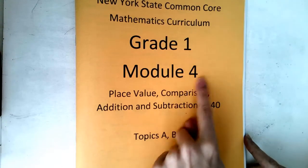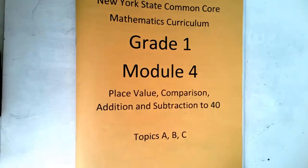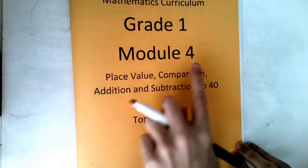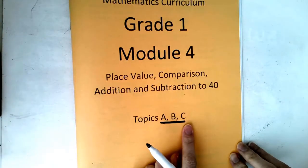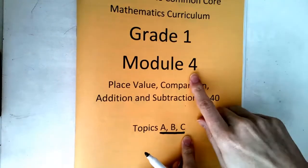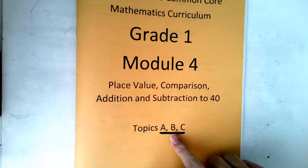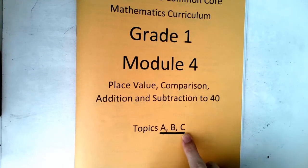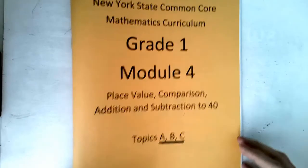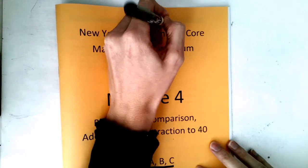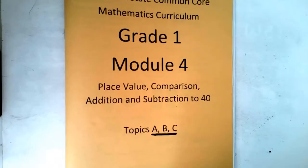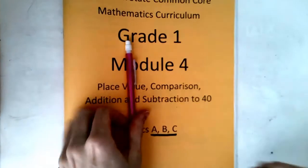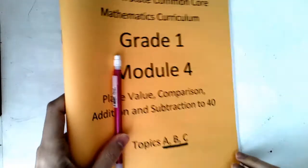Make sure you have the Module Four math journal. There are actually two math journals that say Module Four, so you want to make sure you have the one that says Topics A, B, and C on the front. Once you have that, you can write your name on it. You'll also need a pencil, but I'm going to set these aside for right now.